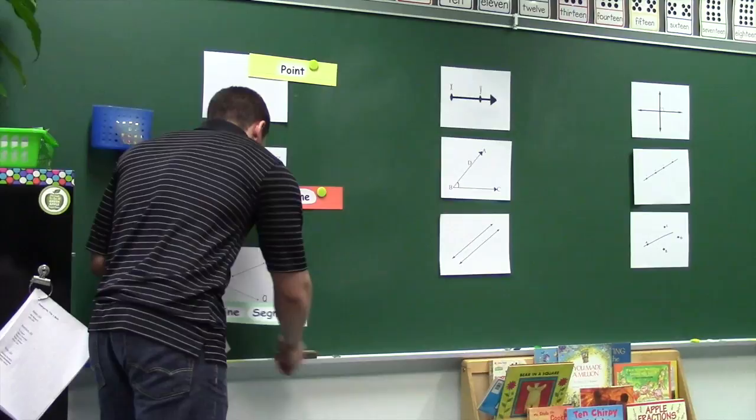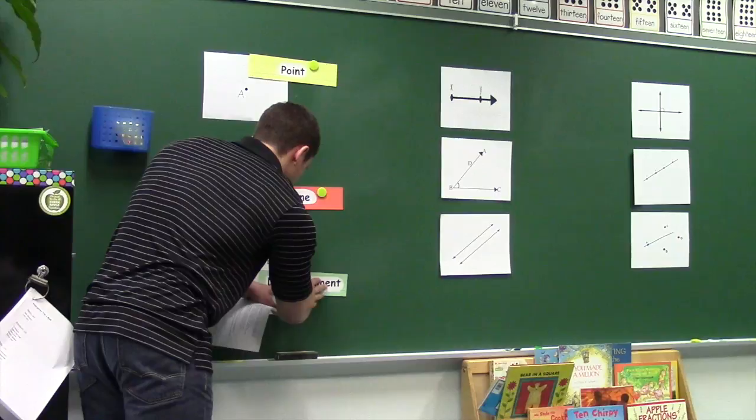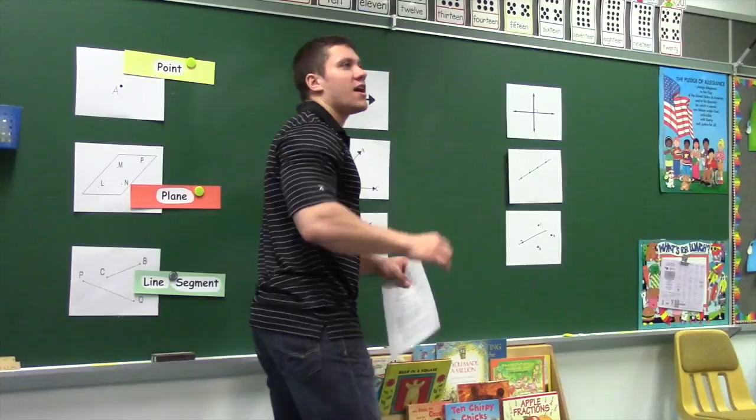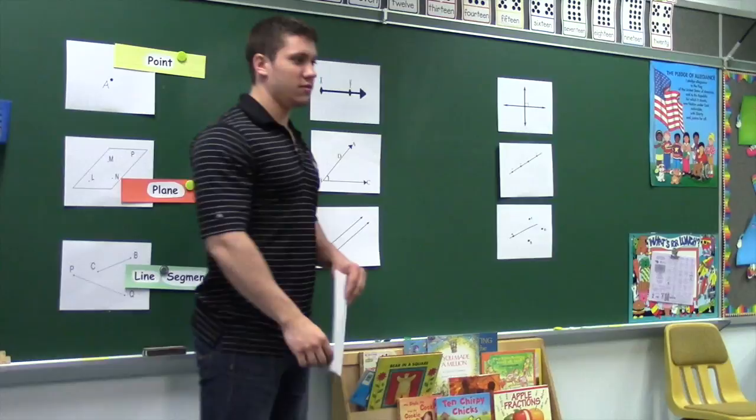What if we have a point and then a line that extends off of that point off into infinity in one direction? In this picture, we have a point, and it's going to extend off to infinity just in that one direction. Nothing extends off in any other direction. We call that a ray.